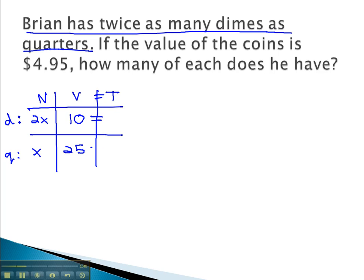We are now ready to calculate the total column. The total column comes from multiplying the number times the value. 2x times 10 is 20x. x times 25 is 25x. The only additional piece of information we need is that the total value of the coins is 495. This means if we add the totals of dimes and quarters together, we get 495.